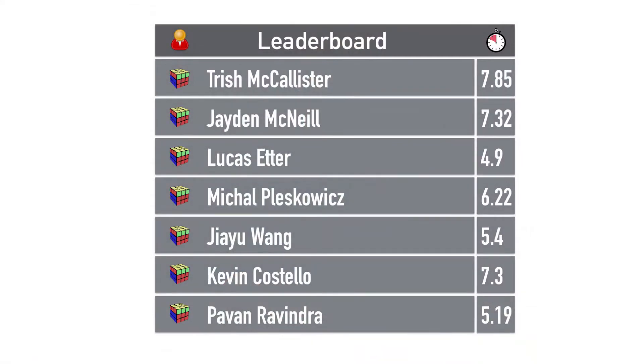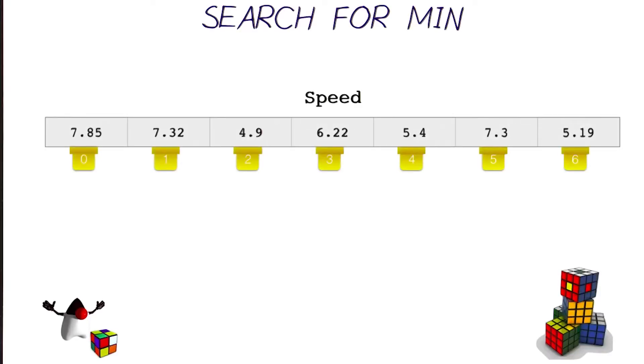But let's go back to the leaderboard here. I'd like you to think about how you found the fastest player. I know that sounds very intuitive for us humans, but what if we wanted to write a function that finds that smallest number in an array like this?